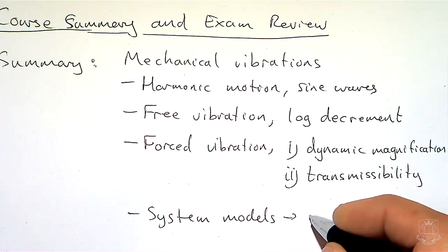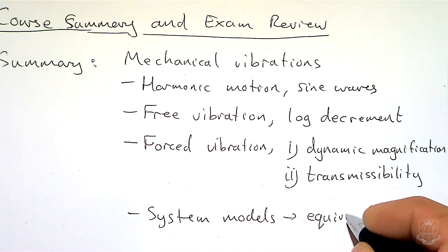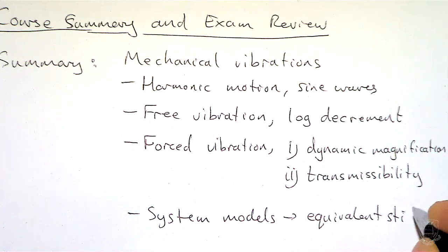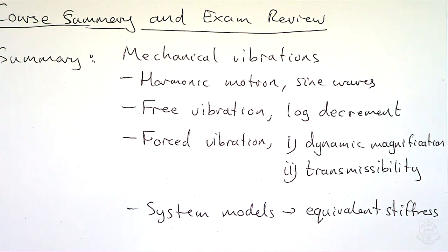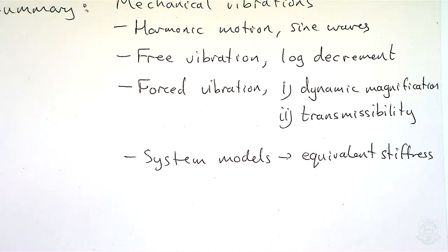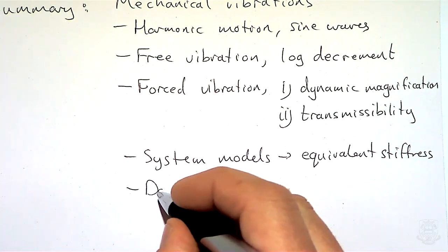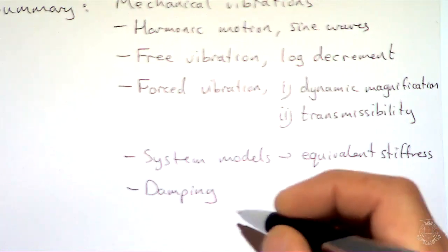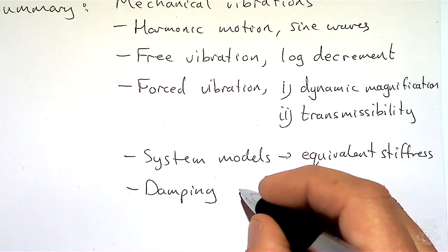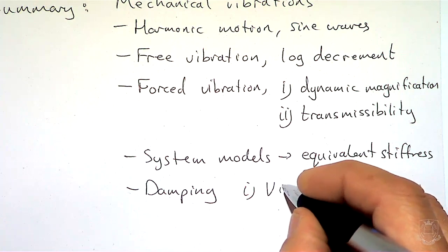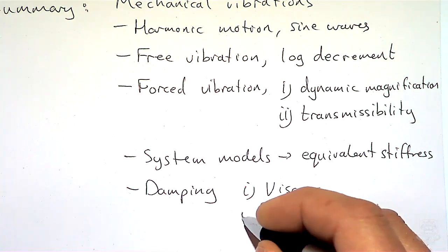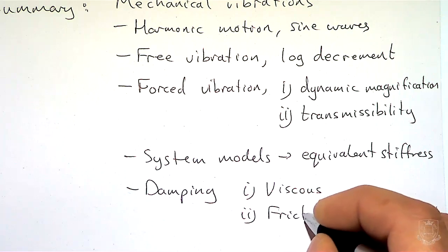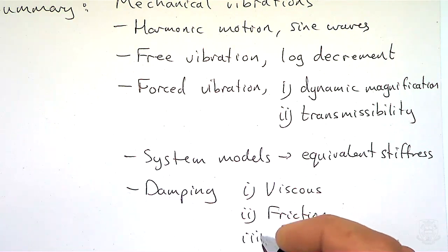We then did some system models, and particularly we looked at things like equivalent stiffness. We used our energy functions to draw an equivalence between a certain system and a simplified version. We talked about damping — how energy is lost from the system — and we had different cases: viscous damping, friction damping, and hysteretic damping as well.